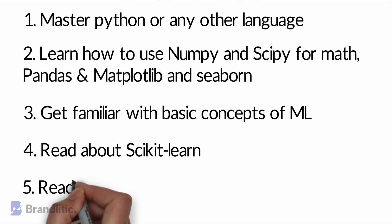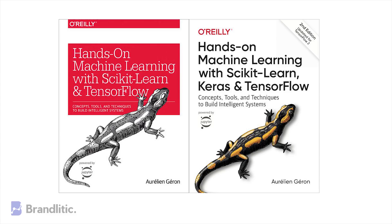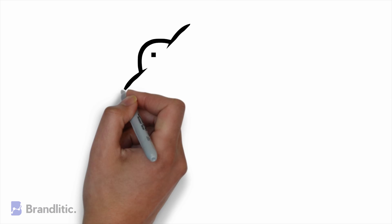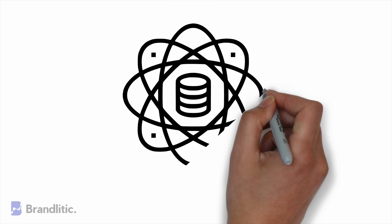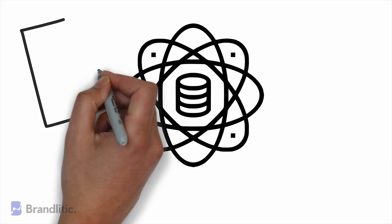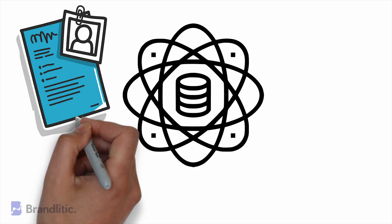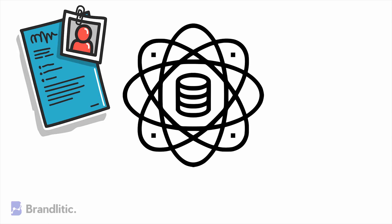Step 5: Read Chapter 2 of the book 'Hands-On Machine Learning with Scikit-Learn and TensorFlow.' A link for this book will be given in the description below. That's all for the 5-step process. After completing it, you'll have an insight into how the data science industry works. But if you are someone who wants to take it up as a career, I would recommend you take the second path, which is the 10-step process.